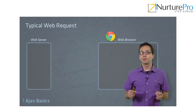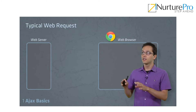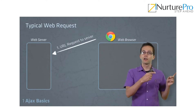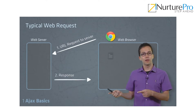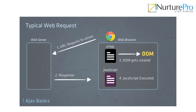Let's take a look at a typical web request without Ajax. Our web browser requests a URL from the server. The server then sends a response which contains an HTML file and maybe some JavaScript files. Then our browser takes the HTML, loads it into our Document Object Model, which we learned about in the previous course. Then our JavaScript gets executed, which may interact with the DOM.